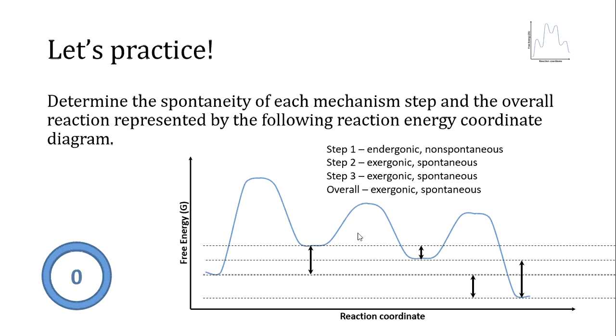Step one is endergonic, non-spontaneous. The intermediates after step one are higher in energy than the reactants.